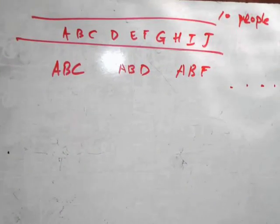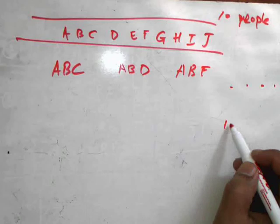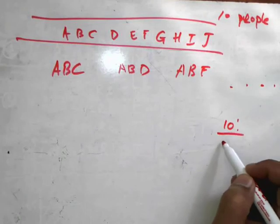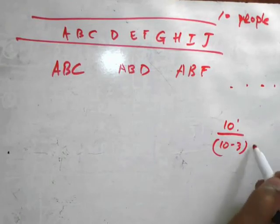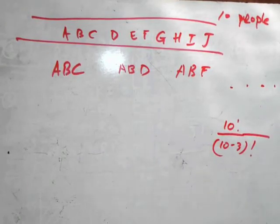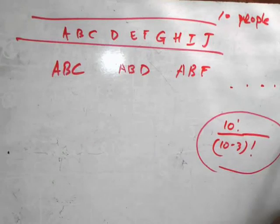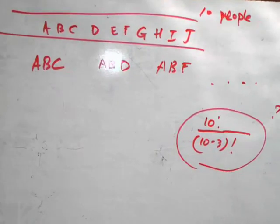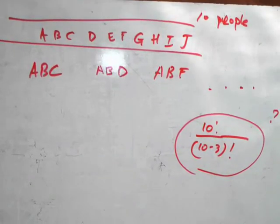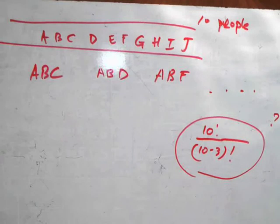Now one thing you might be tempted to do is to say 10 factorial over 10 minus 3 factorial, and I'm going to put a circle here and say, well is this the correct answer? Maybe it is, maybe it's not. You can probably tell from my tone that there's more to it than this, and this is actually not correct for this particular case.